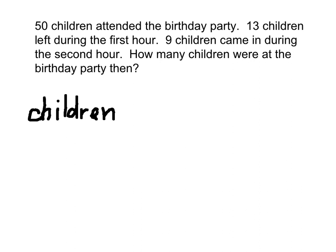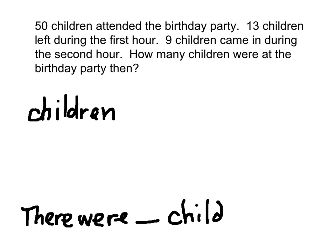Once I've listed who and what's involved in the problem, I'm going to write the answer to the question in a complete sentence in answer form. This is the question right here: 'How many children were at the birthday party then?' And I'll write that in a complete sentence on the bottom: 'There were blank children at the birthday party.' Now I'm going to read through each sentence and stop whenever I see a punctuation mark — that's going to tell me to make sense of the information I've read.